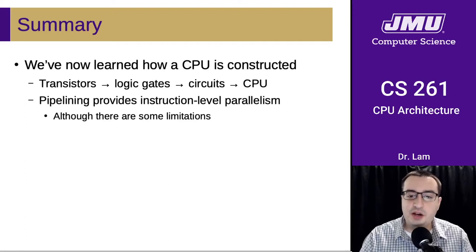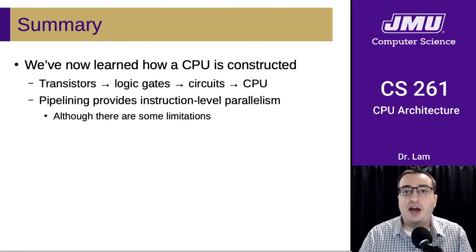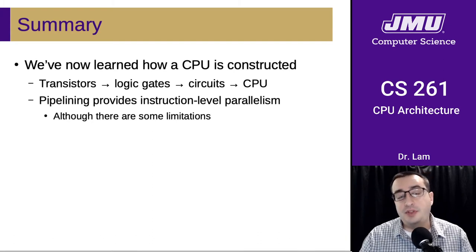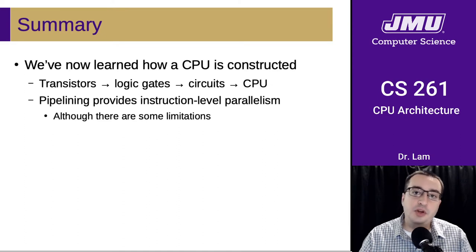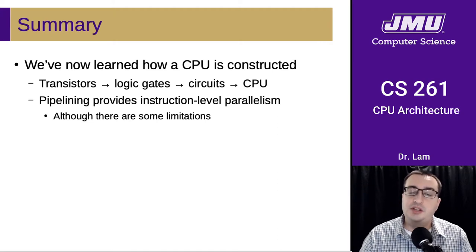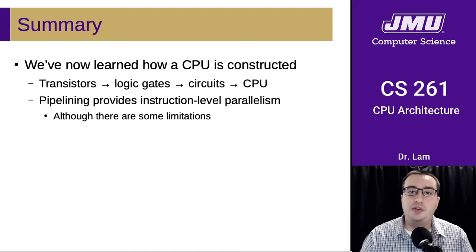So let's summarize. We've now learned the basics of how a CPU is constructed. We started at the transistor level with these low-level logic gates, and we slowly built those up through various layers of abstraction to make circuits that were ever more complex, until we got to the point where we could put them all together to form a CPU.